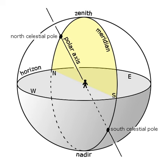In astronomy, the meridian is the great circle passing through the celestial poles, as well as the zenith and nadir of an observer's location. Consequently, it contains also the north and south points on the horizon, and it is perpendicular to the celestial equator and horizon. A celestial meridian is coplanar with the analogous terrestrial meridian projected onto the celestial sphere.